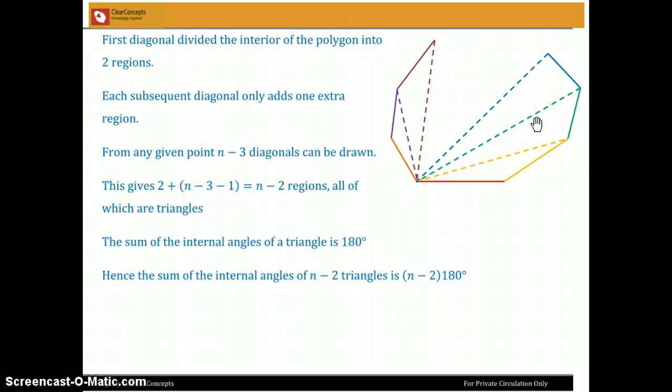Each subsequent diagonal, however, adds only one extra region. So, when I add this green diagonal, I end up with three, not four. When I added the yellow diagonal, I got two regions. I added the green diagonal, I get one, two and then three regions. So, each subsequent diagonal adds only one extra region. Now, from a given point, we mentioned that only n minus three diagonals can be drawn and so we can finally get two for the first diagonal and then I have n minus four remaining diagonals, each of which adds an extra region. So, two plus n minus four regions which is n minus two regions and now all of them will be triangles. Now, we know that the sum of the internal angles of a triangle is 180 degrees and so if I have n minus two triangles, I get n minus two times 180 degrees.